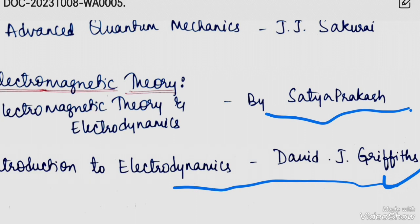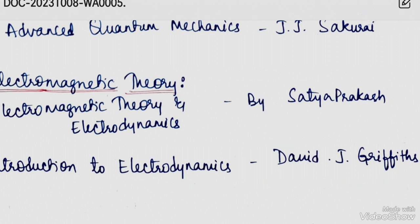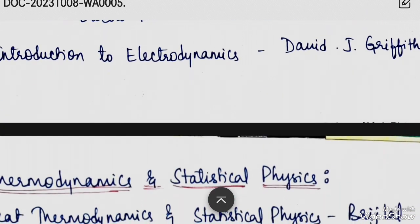Both Griffith books — for Quantum Mechanics and Electromagnetic Theory — are easy to read and understand, so go for them.